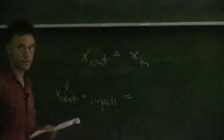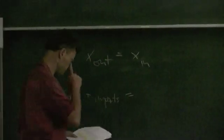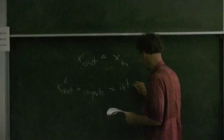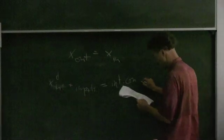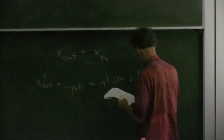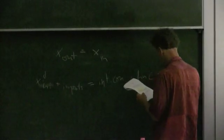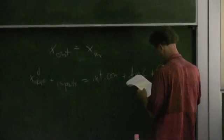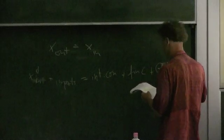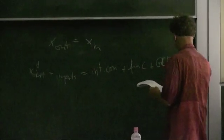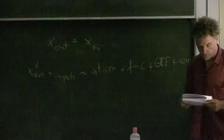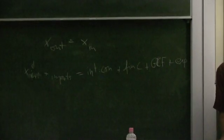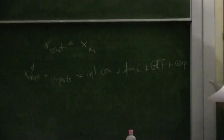Now, where do these inputs go? This is intermediate consumption plus final consumption plus gross capital formation plus exports. Now, there's a lot of new terms. I'll explain them in detail one after the other.